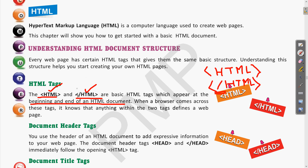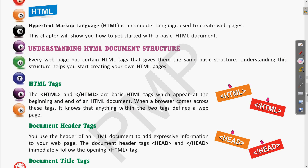When a browser comes across these tags it knows that everything within the two tags defines a web page. Whenever we write any HTML code, all of it is going to be represented in a web page. At the beginning and end of the document, these HTML and closing HTML tags tell the browser to interpret the whole program as a web page. Next are the different other types of tags — first is the header tag.